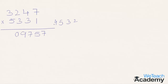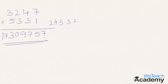In the next step, 3 into 3 is 9, plus 5 into 2 is 10, giving 19. Plus the earlier carry of 4, 19 plus 4 is 23. So 3 is taken to the final result and 2 is carried to the final step. In the final step, 3 into 5 is 15, plus the carried 2, gives 17. So 17 is taken to the final result. The final answer for 3247 multiplied by 5331 is 17309757.